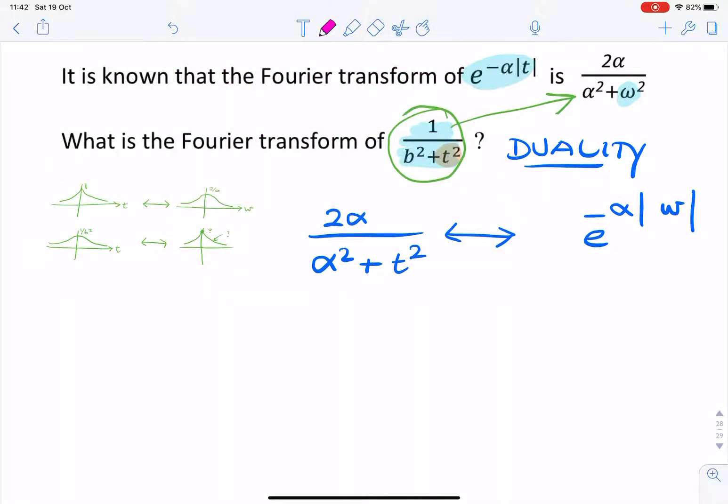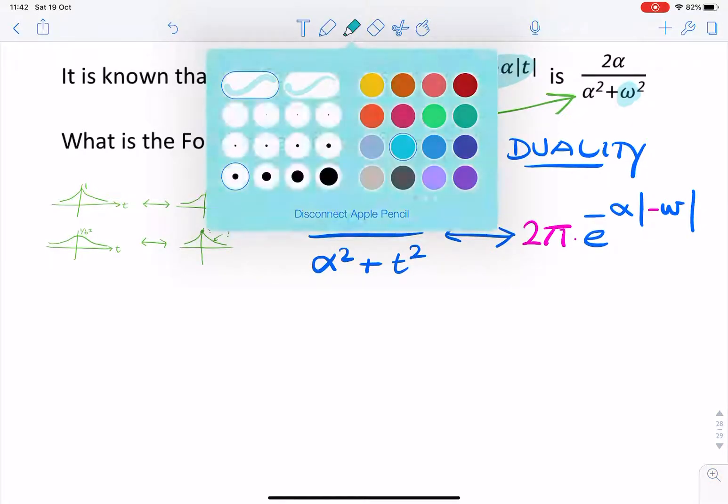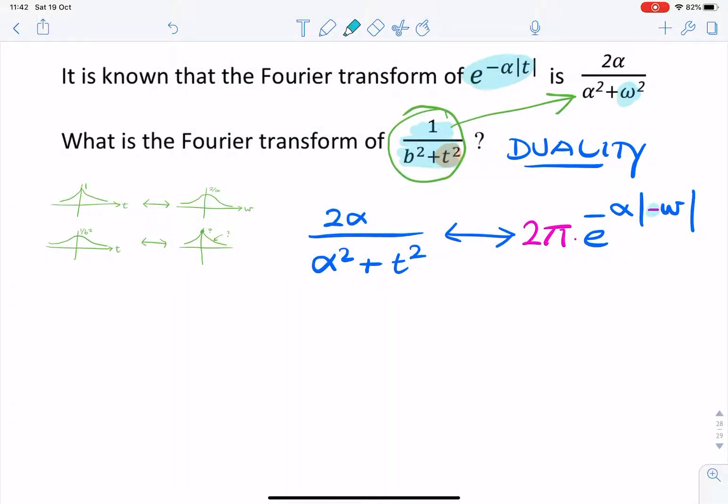One is there's going to be a minus sign there, and the other is a factor of 2π there. So actually, they're minor differences, but they affect the final result. So you will notice that the absolute value will remove the effect of the negative sign.